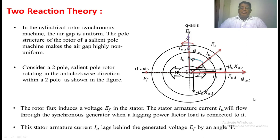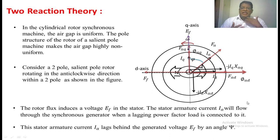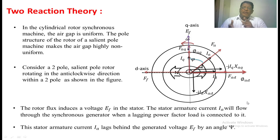Whatever supply we give to the stator winding, it has to compensate the armature resistance drop, armature leakage reactance drop, and armature reaction drop. For the armature reaction drop, there are two components: one is the d-axis component and another is the q-axis component.